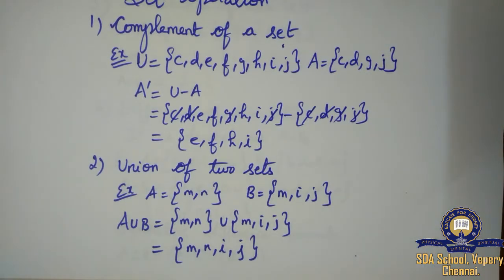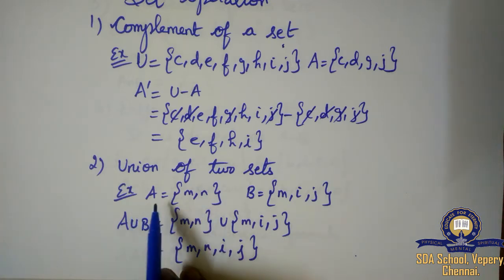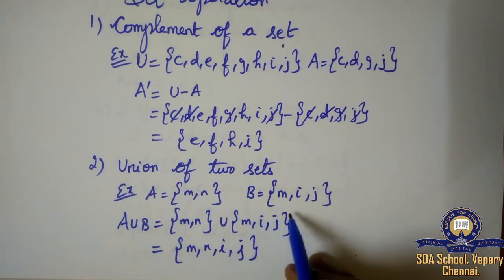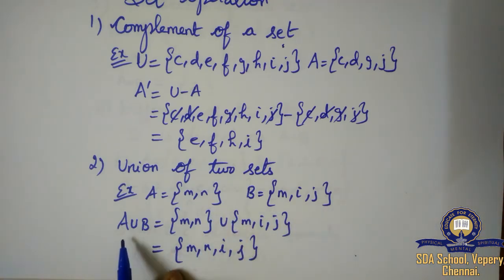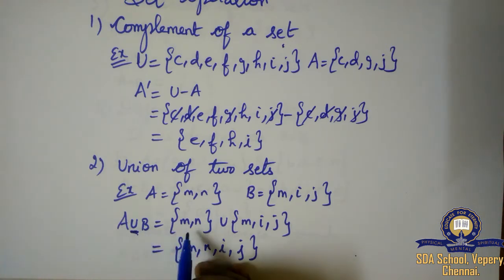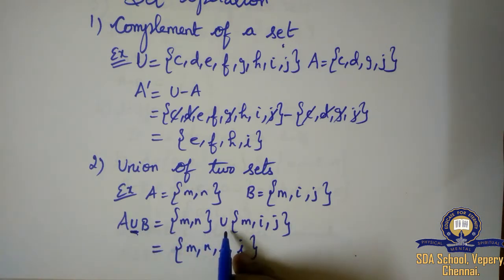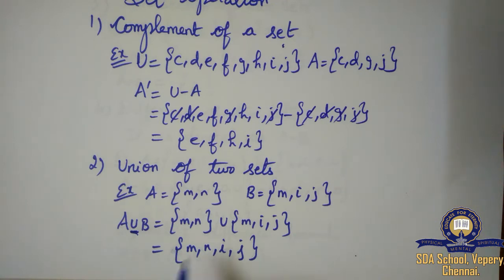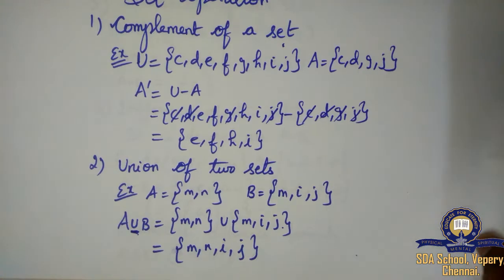Next is union of two sets. Union means joining or combining both the sets. Here I have given an example: A is equal to {M, N} and B is equal to {M, I, J}. A union B — instead of A I have written M, N, then the union symbol, then instead of B I have written M, I, J. Union means combining all values. So M, N, then I and J. M is repeated twice, so we write it only once. That is the A union B answer.